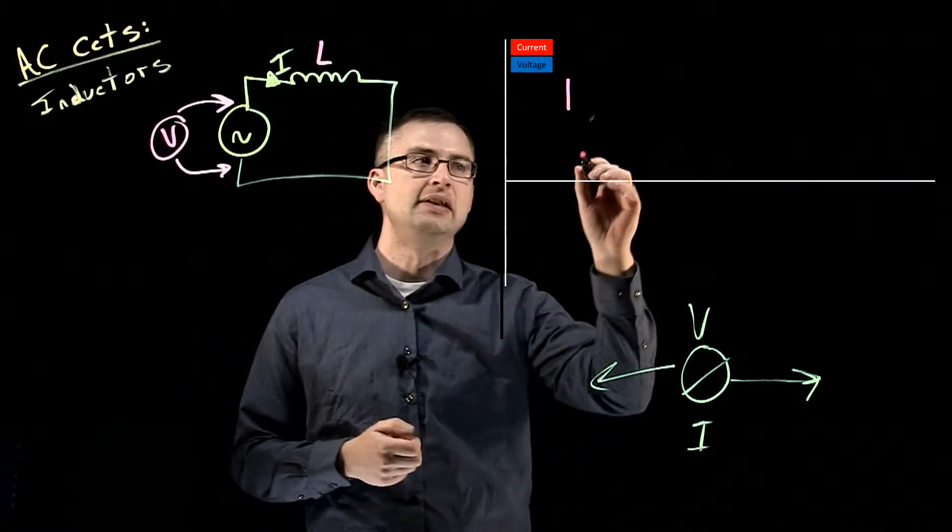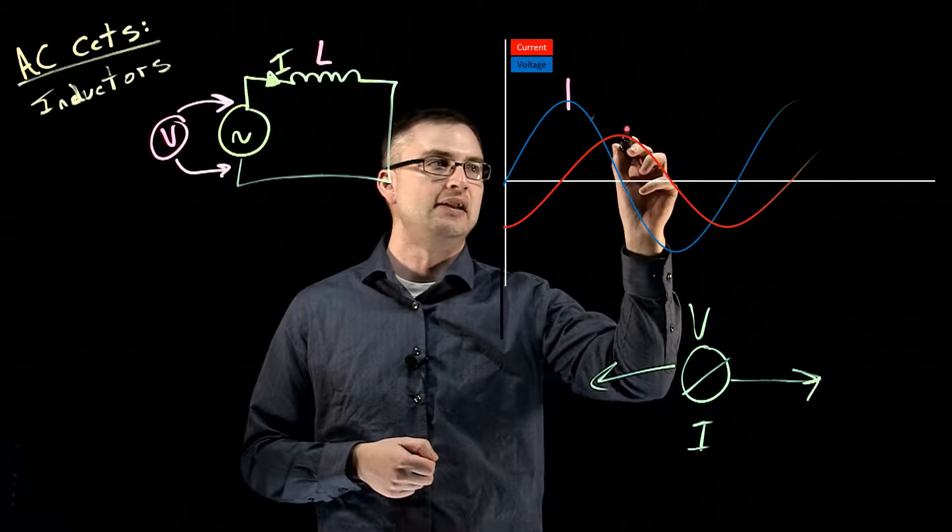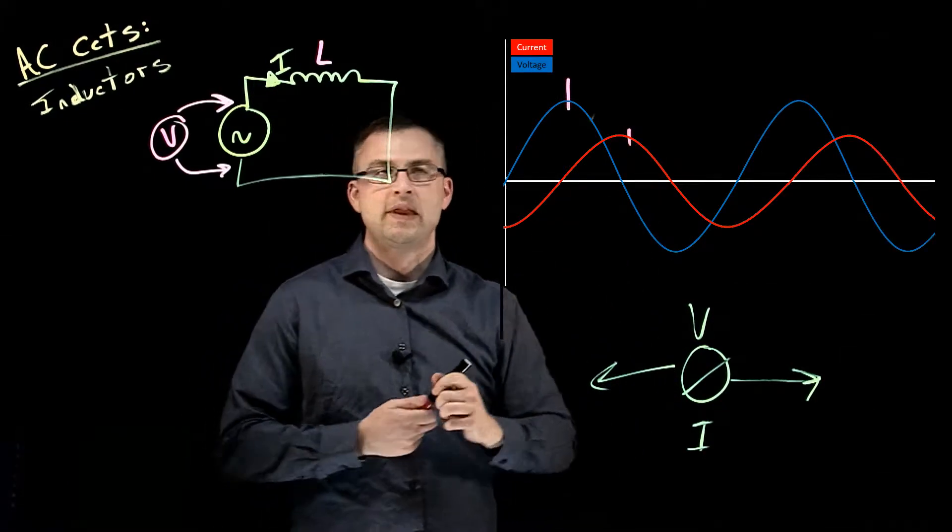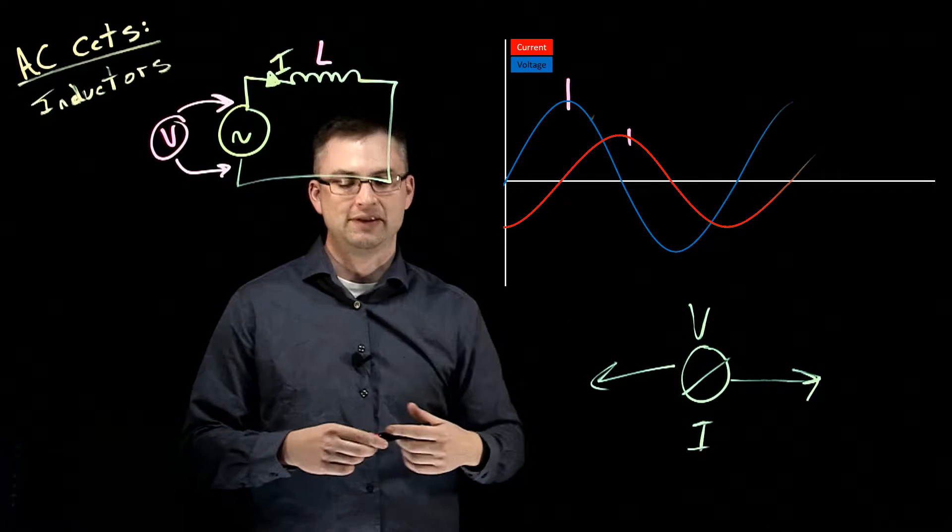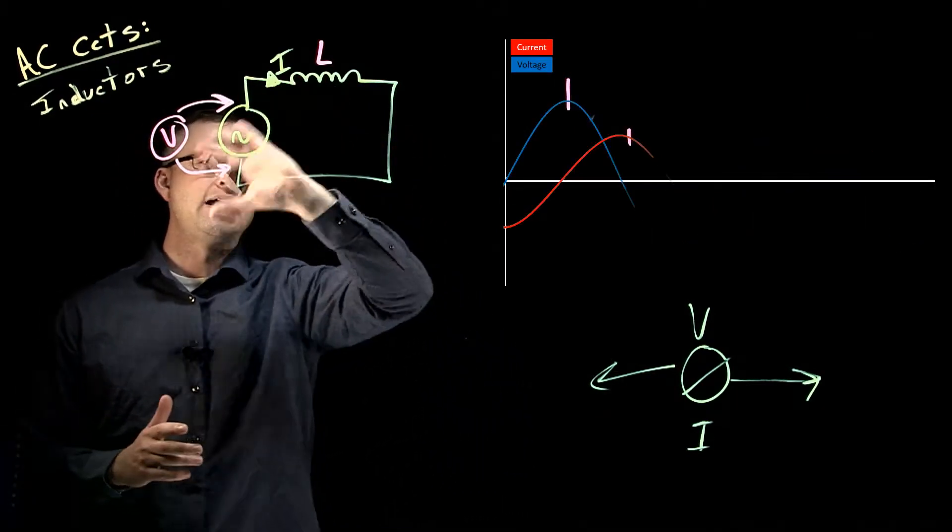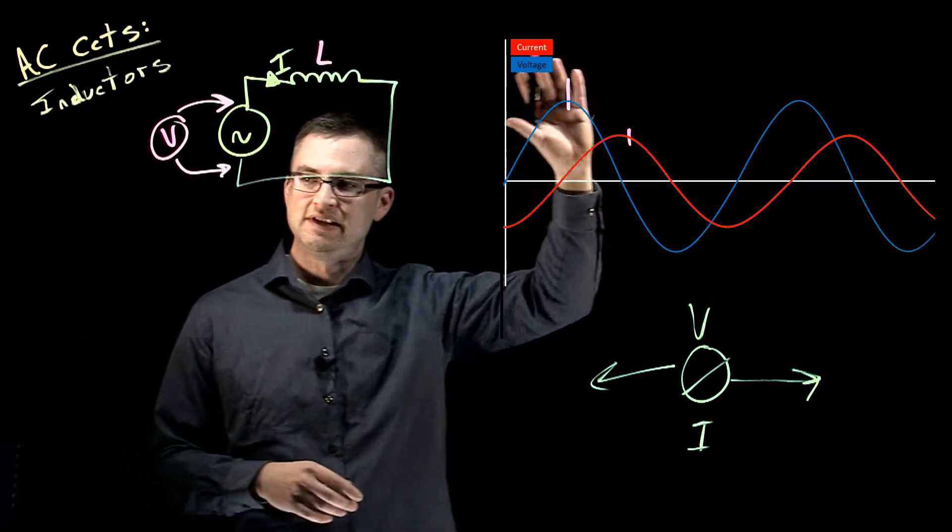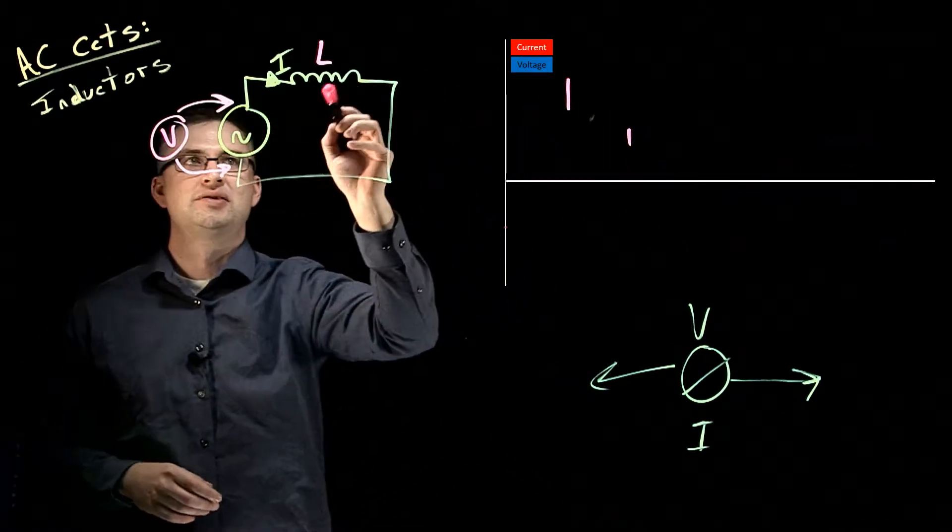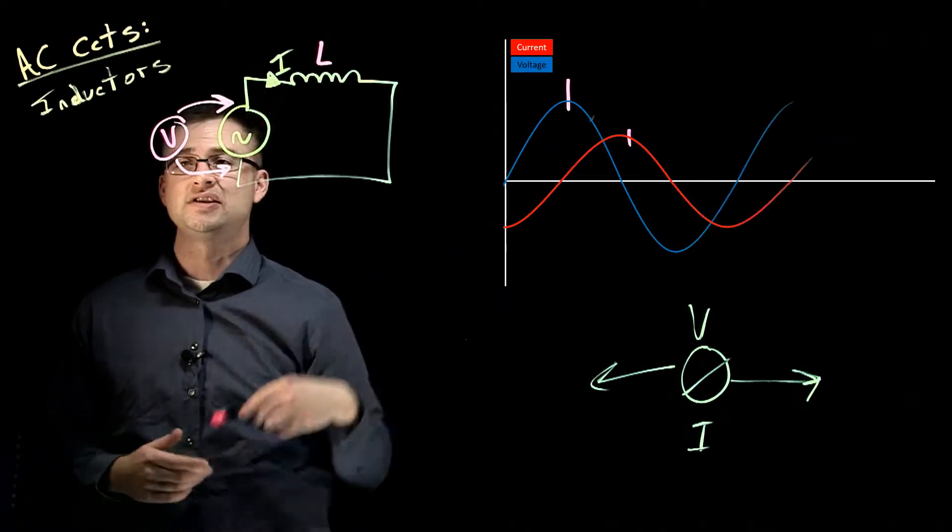The current is peaking back here, so the current is lagging the voltage in the inductor. That means our source is hitting max, and after it starts to come down again, we can see the voltage starts to drop, and as a result, the current actually starts to increase.